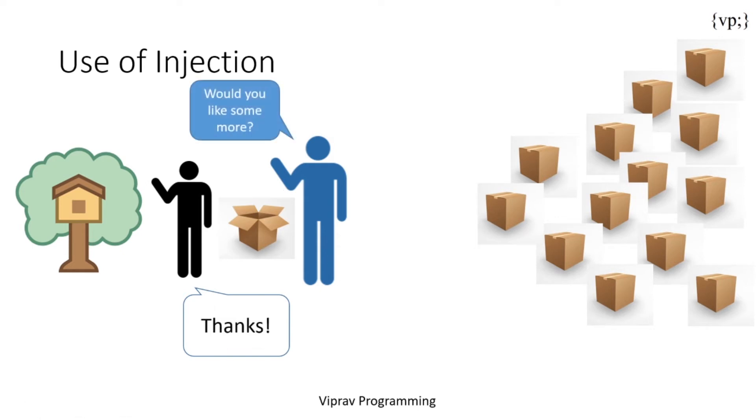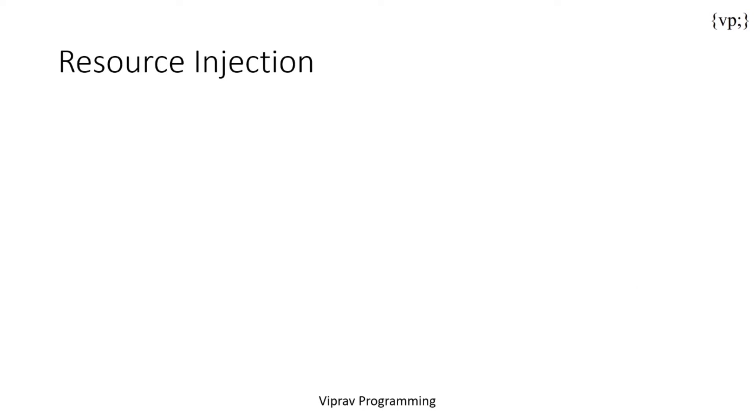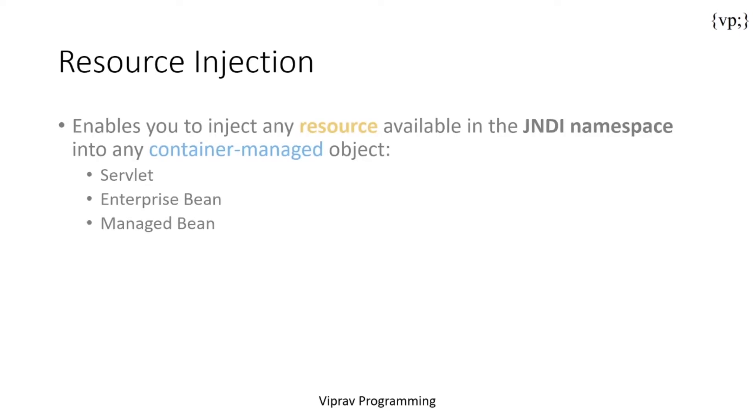Now let's take a look at some resource injection. Resource injection enables you to inject any resource available in the JNDI namespace into any container managed object, such as a servlet, an enterprise bean, or a managed bean. So again, like I said before, a resource is your package. JNDI namespace is the name of the package. And the container managed, it just means that the container can access this resource. And the container managed objects are the servlet, enterprise bean, and managed bean.